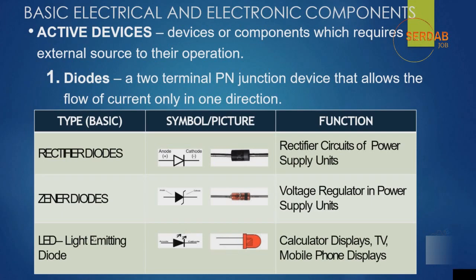The third most common type is the LED, or light-emitting diode. This is the symbol for the LED — it's the same as the diode symbol but has two arrows going out, which means it will emit light once current passes through it. Calculators, displays, TV, mobile phone displays, and any indicator circuit use LEDs to indicate a specific state, such as on and off. These are very common components in any electronic circuit.